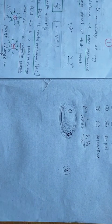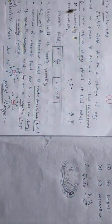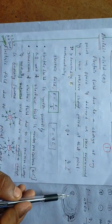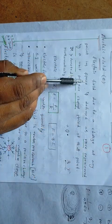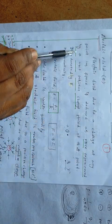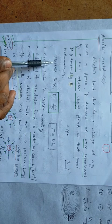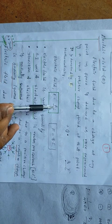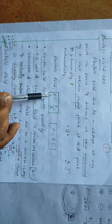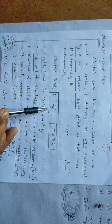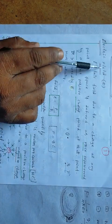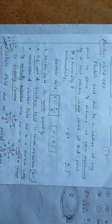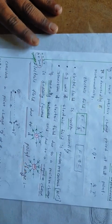So electric field is nothing but the space in which a unit positive test charge experiences a force. Electric field due to a charge at any point in space is defined as the force experienced by a unit positive charge placed at that point. Mathematically, electric field E equals force per charge, that is E = F / q.